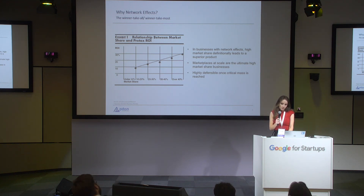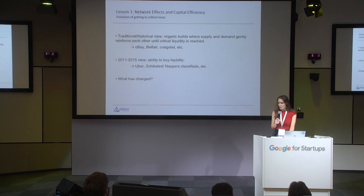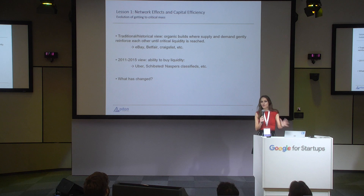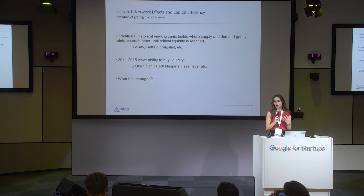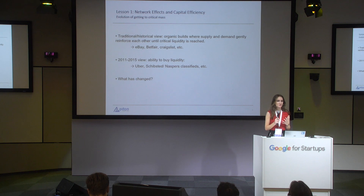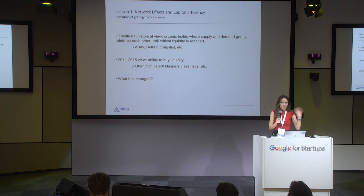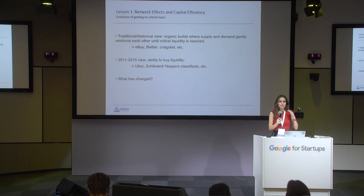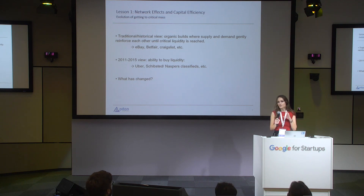Now, what are some of the lessons we've learned over the years? Number one: capital efficiency is not what it used to be. While the fundamentals of pre- and post-liquidity network effects haven't changed much, the tactics of getting to critical mass have changed significantly. Traditionally, marketplace and network effect businesses were organic builds where supply and demand gently reinforced each other until critical mass was reached.